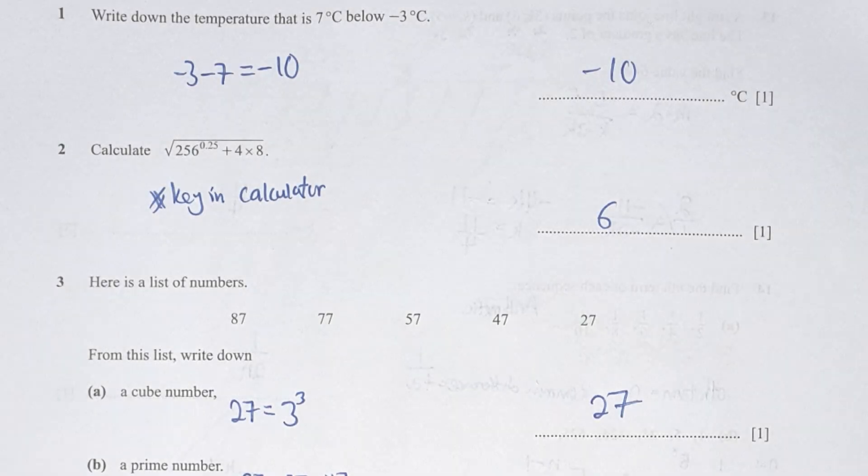The temperature that is 7 celsius lower than negative 3 should be negative 3 minus 7, which is negative 10. For question 2, just key in your calculator and you should get your final result as 6.